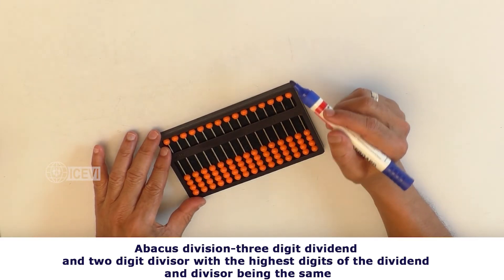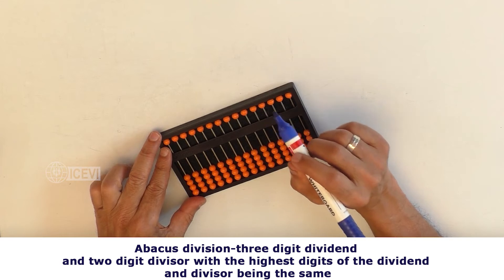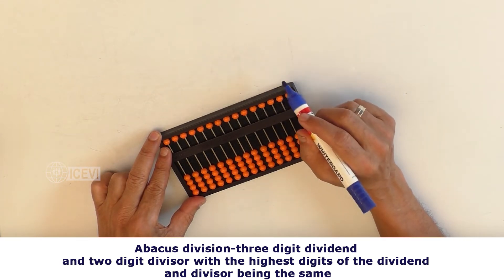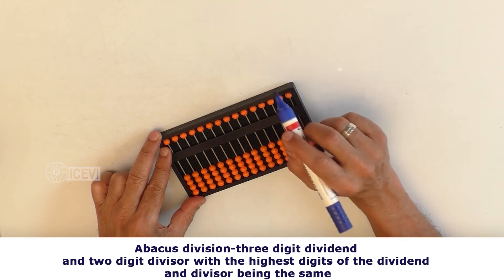Title of the video: Abacus Division, 3-Digit Dividend and 2-Digit Divisor, with the highest digits of the dividend and divisor being the same.